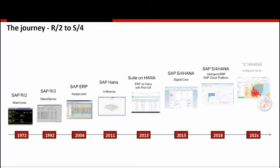Up until 2015, the basic product was either R3 or ECC. Even though there were multiple EHP levels of ECC, the product was still fundamentally the same. In 2015, there was a new innovation: S/4HANA. What S/4 brought was a completely redesigned data structure, significant simplification of business processes, and the ability to run it either on the cloud or on-premise.